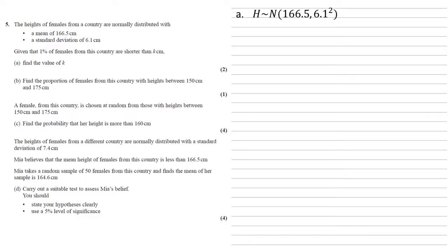So we're modeling H, the heights of the females, as a normal distribution with a mean of 166.5 and a variance of 6.1 squared. And we're told that the probability that H is smaller than K is 1% or 0.01. Now if your calculator can do the inverse normal, you can just put in an area of 0.01 with the mean and the standard deviation that we've been given and that will give you the answer straight away.